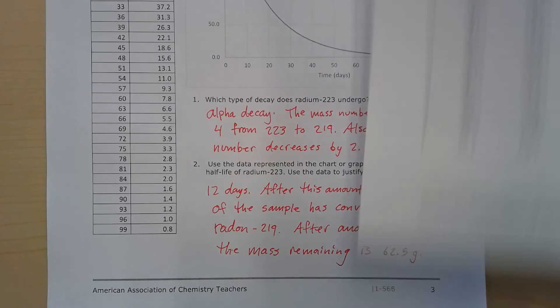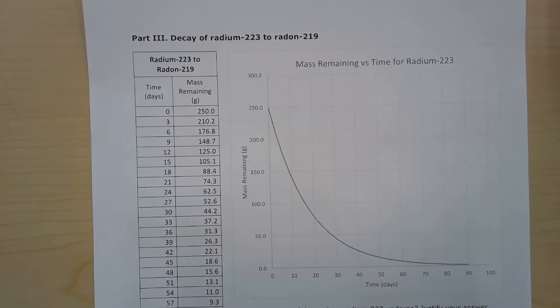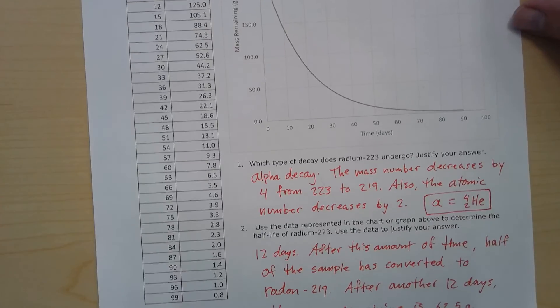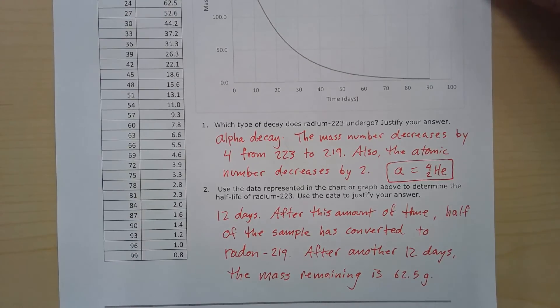Okay. And for the third page, part three. Here's the decay of radium-223 to radon-219. We have a similar setup, and only two questions. So which type of decay does radium-223 undergo? Justify your answer. I said alpha decay,